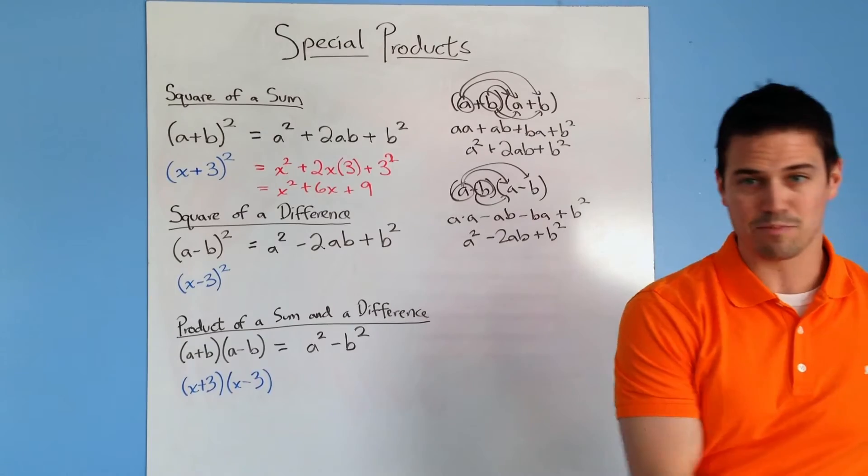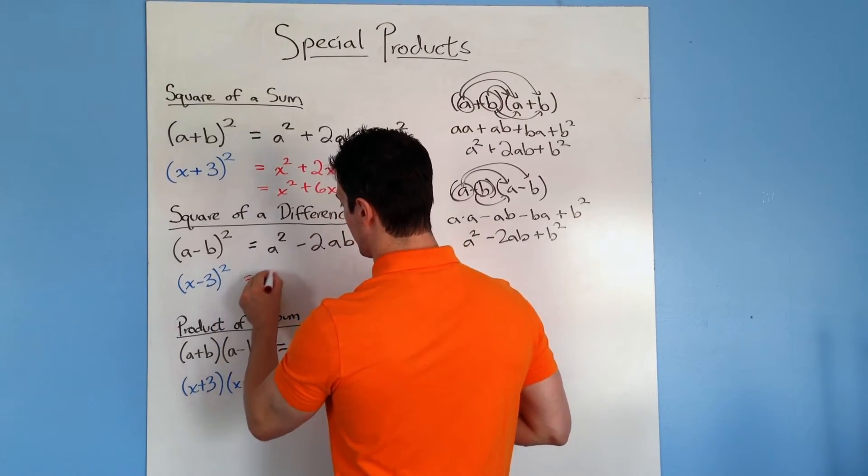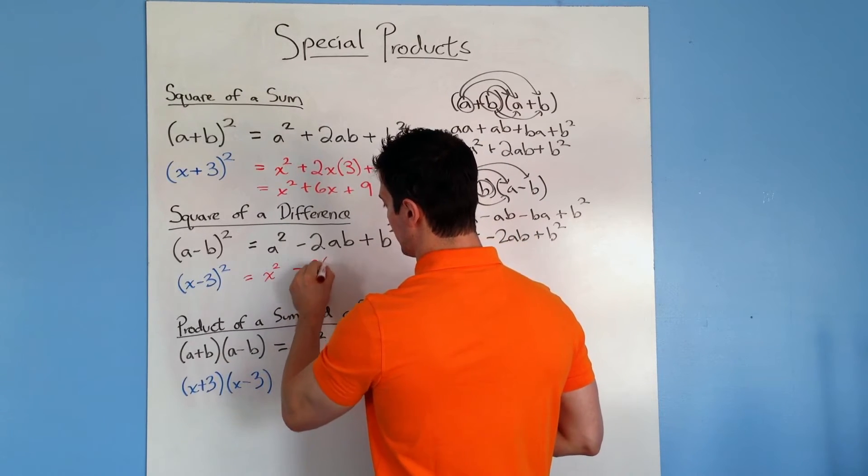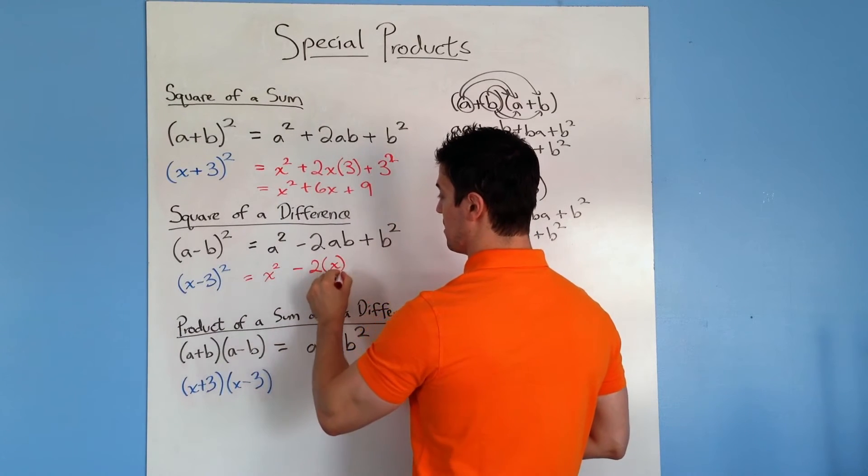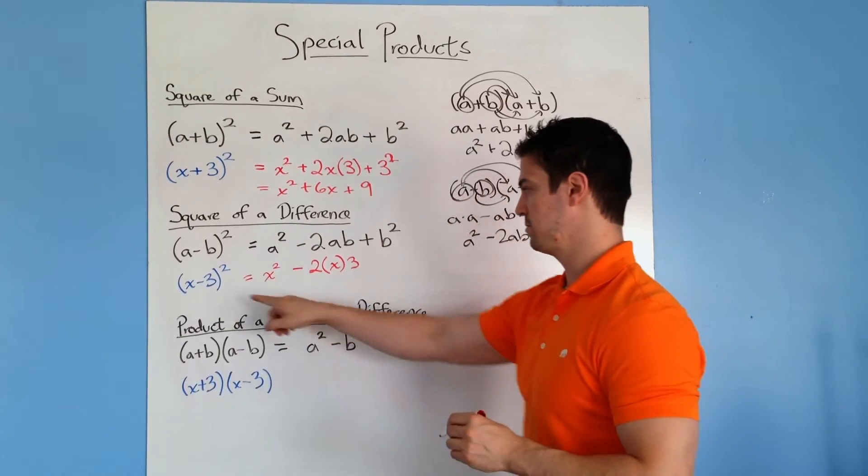So let's work out our example. We have x minus 3 squared. The a term is the x again, so x squared minus 2 times that a term is x again, times 3,